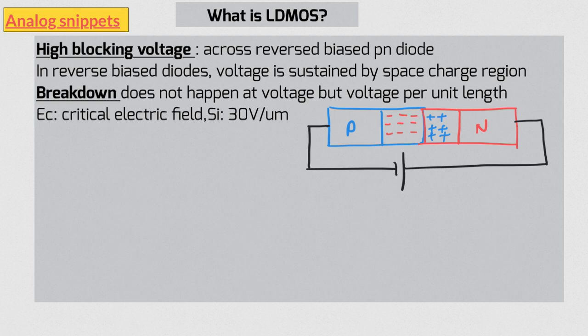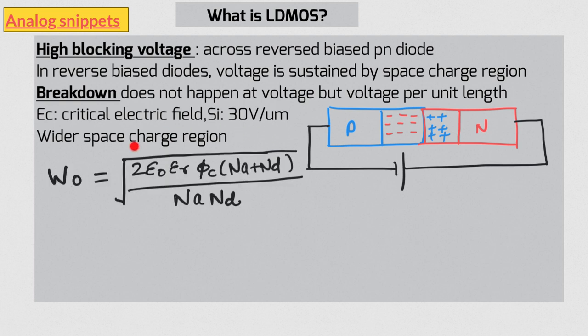So the key to achieving a high blocking voltage is to make this space charge region wider. Under zero bias condition, the width of this space charge region depends on the doping concentration. In this formidable looking equation, NA is acceptor doping concentration and ND is donor doping concentration. Now let's assume that P side is much more heavily doped as compared to the N side. In such scenarios, the numerator is dominated by NA, and then it gets cancelled by the denominator NA.